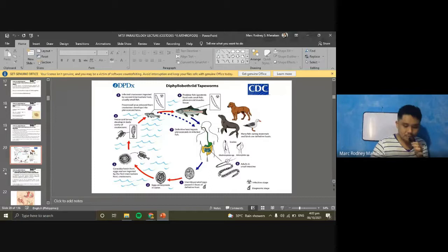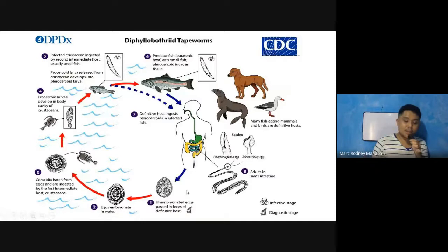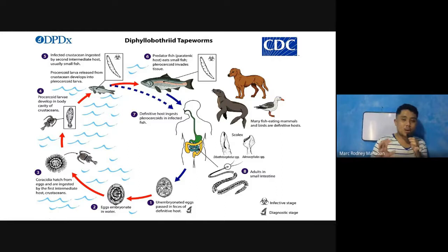The anemia caused by D. latum is described as similar to pernicious anemia. In pernicious anemia — an autoimmune disease — the parietal cells are destroyed, so the body cannot produce intrinsic factor and thus cannot absorb vitamin B12, even if B12 intake is adequate. In D. latum infection, intrinsic factor is present but vitamin B12 is depleted by the parasite. Both result in the same end picture: megaloblastic anemia.